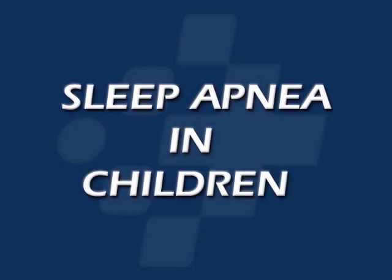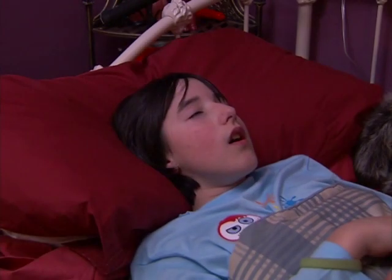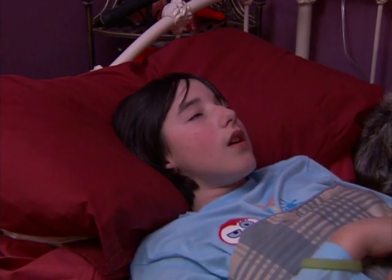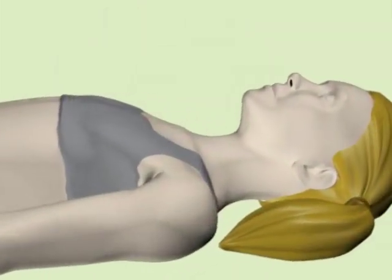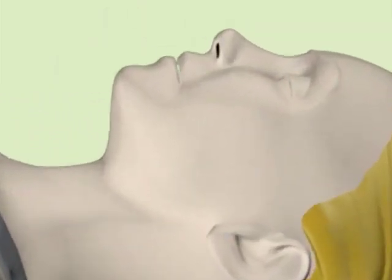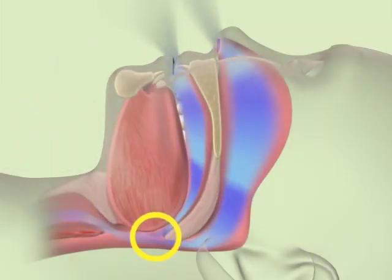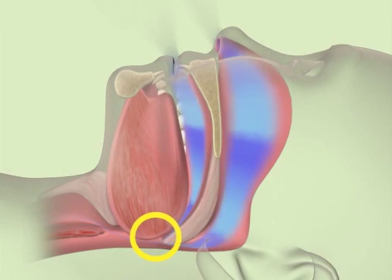Sleep Apnea in Children. Sleep disorders in children range from mild snoring to a condition known as obstructive sleep apnea, or OSA. A child with obstructive sleep apnea has partial or complete airway blockage during sleep, usually with loud snoring and breathing pauses. This breathing pause is called apnea.